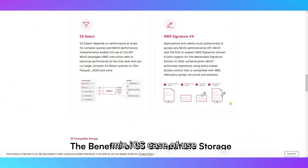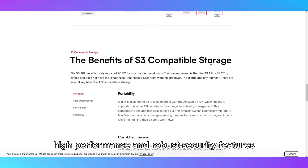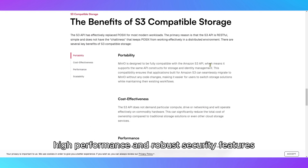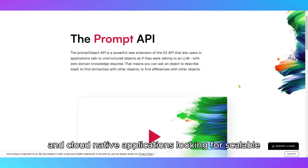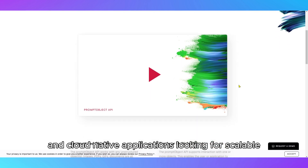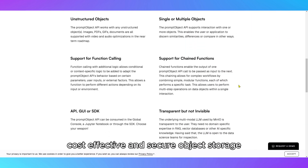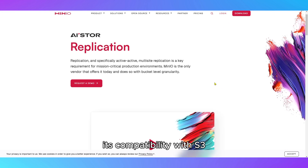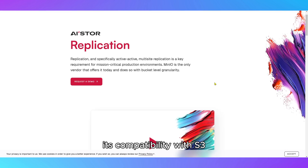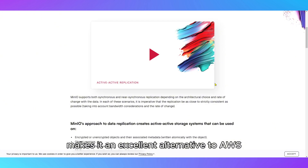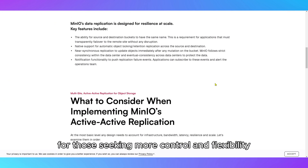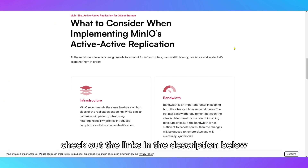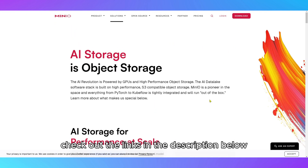Minio's ease of use, high performance, and robust security features make it a great option for developers, enterprises, and cloud-native applications looking for scalable, cost-effective, and secure object storage. Its compatibility with S3 makes it an excellent alternative to AWS for those seeking more control and flexibility. For more details, check out the links in the description below.